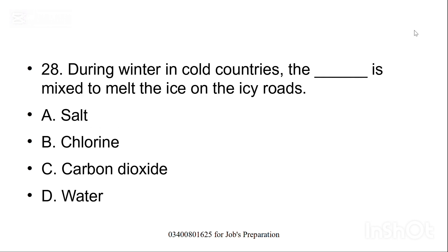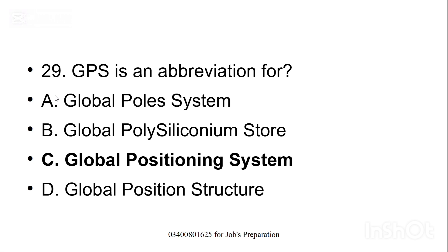During winter in cold countries, the dash is mixed to melt the ice on the icy roads. Kaunsi cheez hai jo ke ice ko melt karne mein madad karti hai? Option A, salt is the correct option. GPS is the abbreviation of, correct option is C, Global Positioning System.